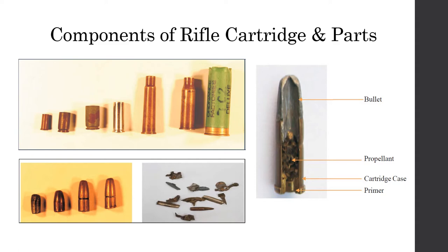The cartridge case is generally made of copper. The propellant can be smokeless powder or smoke powder — smokeless powders include single base, double base, and triple base types. The primer is the component that activates ignition; the ignited fire enters the propellant, which combusts and increases pressure inside the cartridge, throwing the bullet out of the firearm.